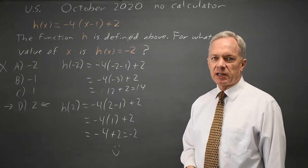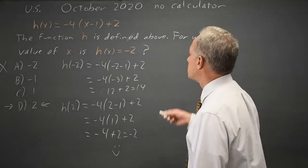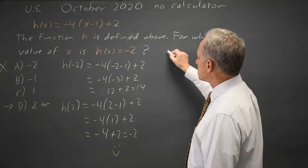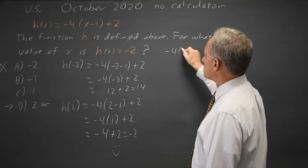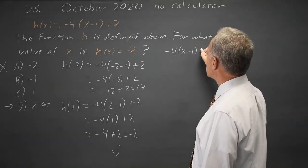Alternatively, I can solve this algebraically rather than guess and check. I want h(x), which is -4(x-1)+2.